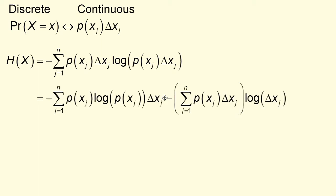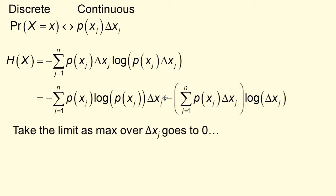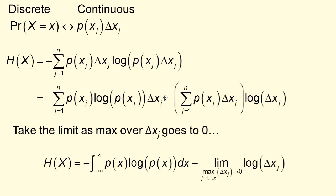We can split that out using the properties of the logarithm, and we'll get a sum p(x_j) log p(x_j) × delta x_j minus the sum p(x_j) delta x_j × log(delta x_j). Then you can take the limit as the max over delta x goes to zero, and what you get is the negative integral from −∞ to ∞ of p(x) log p(x) dx, minus the limit as the norm of the partition goes to zero of log(delta x), because the sum of p(x_j) delta x_j — the sum of probabilities — sums to one.